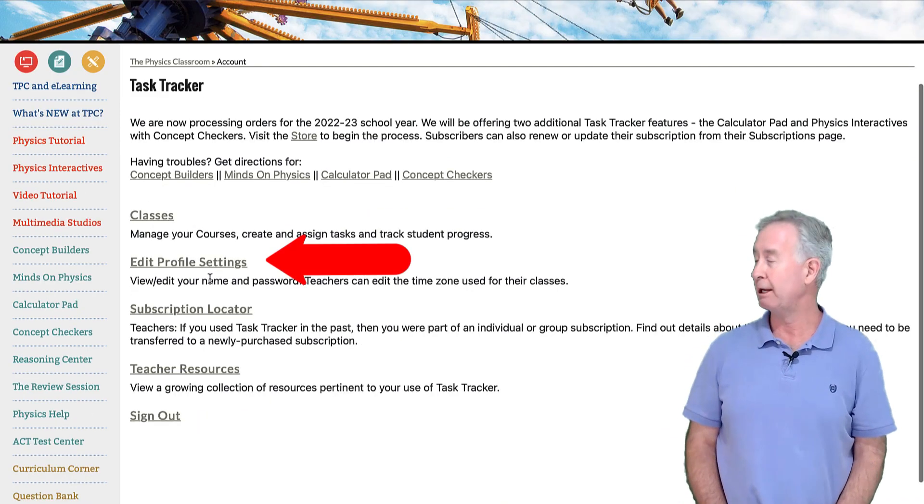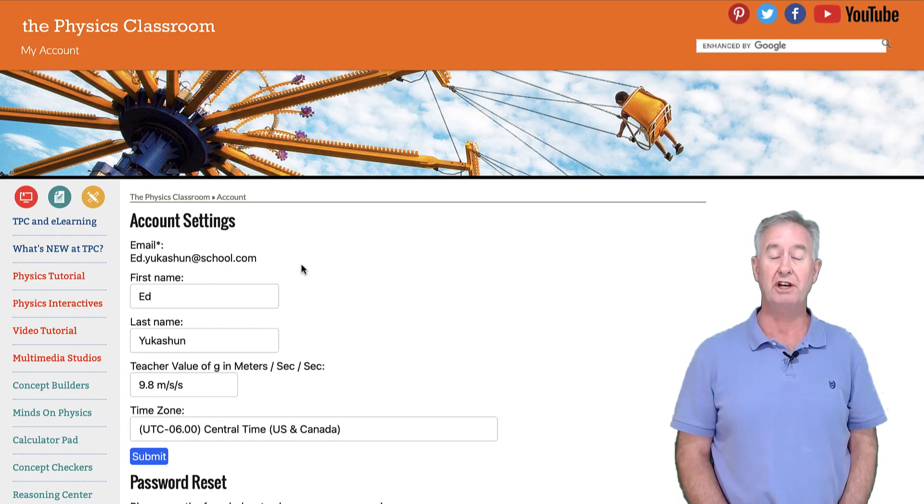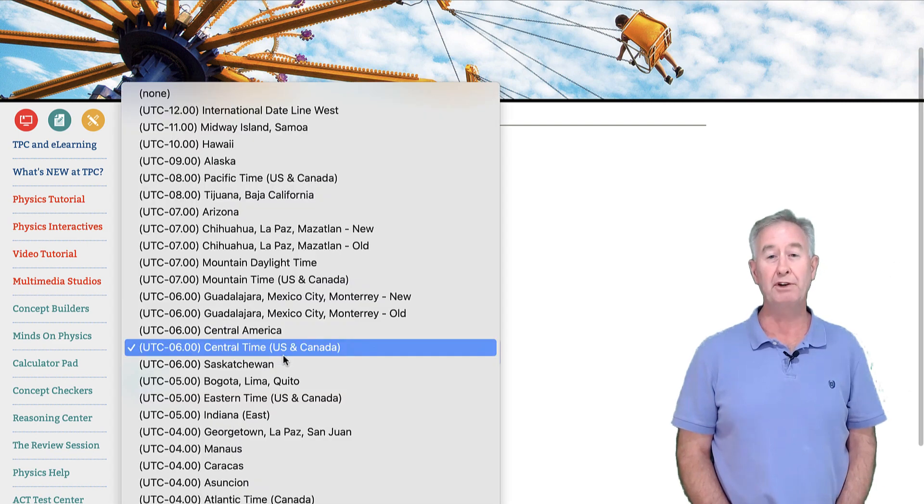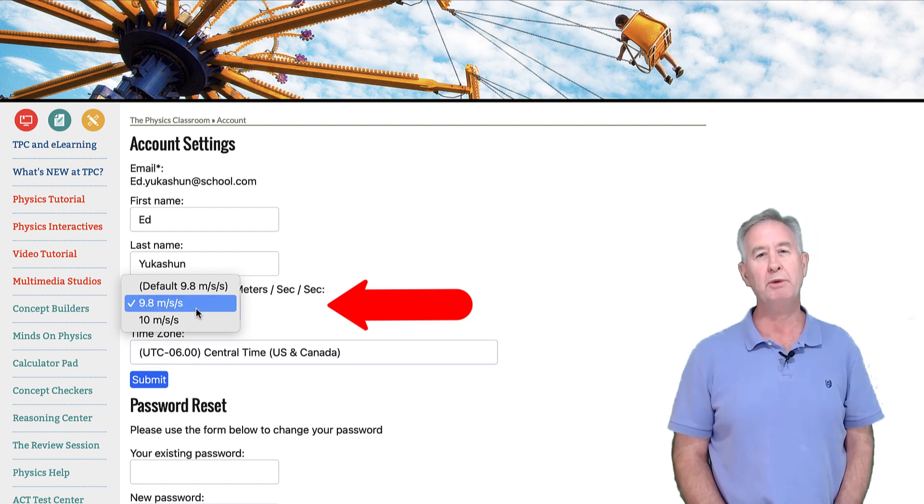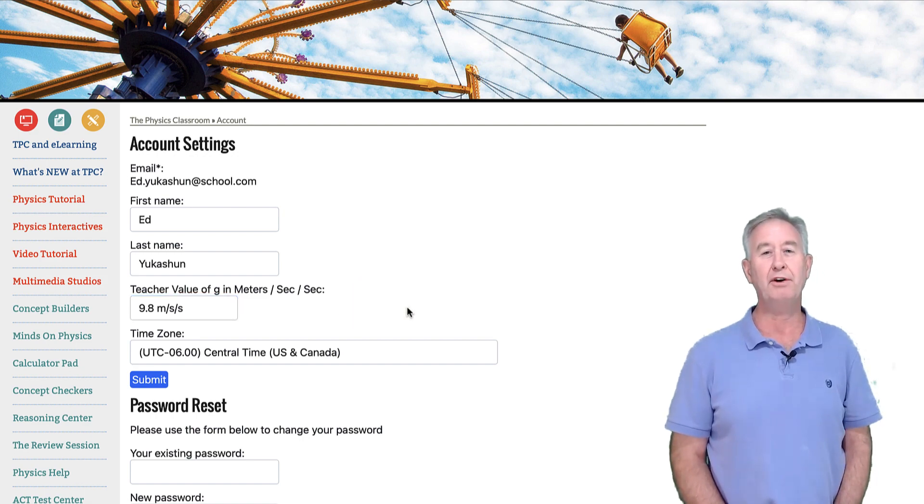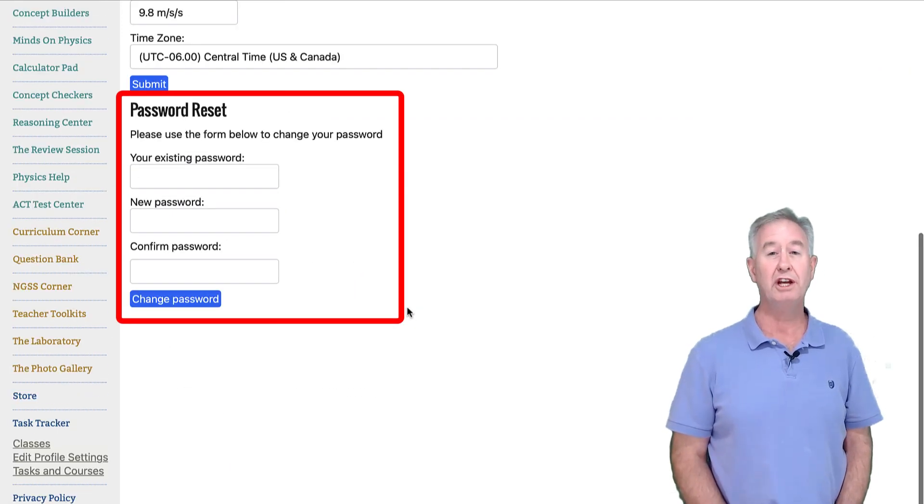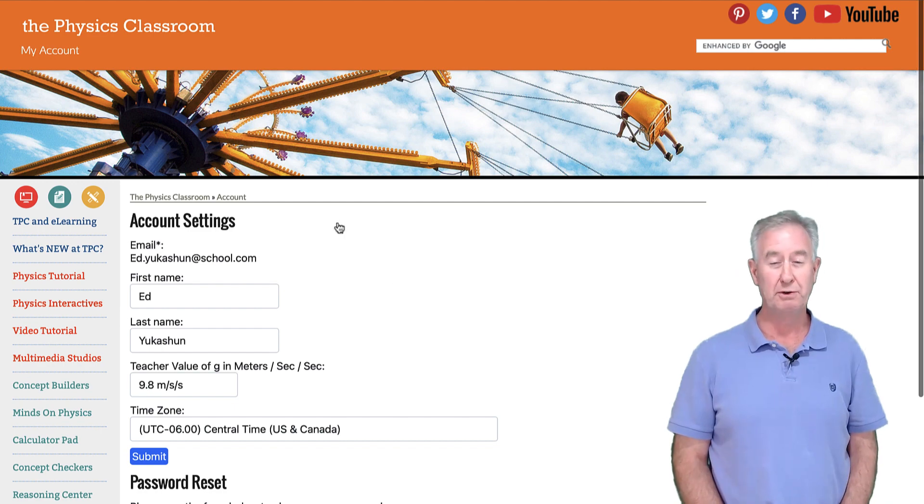The first is the Edit Profile Settings link. If you haven't been to profile settings yet, tap that link and do three things. First, set your time zone. Second, set the value of G. The default is 9.8, but many teachers have requested for us to use 10 for our calculator pad assignments. And third, if you haven't done so already, change your default password you received when you signed up for an account to whatever you wish it to be.